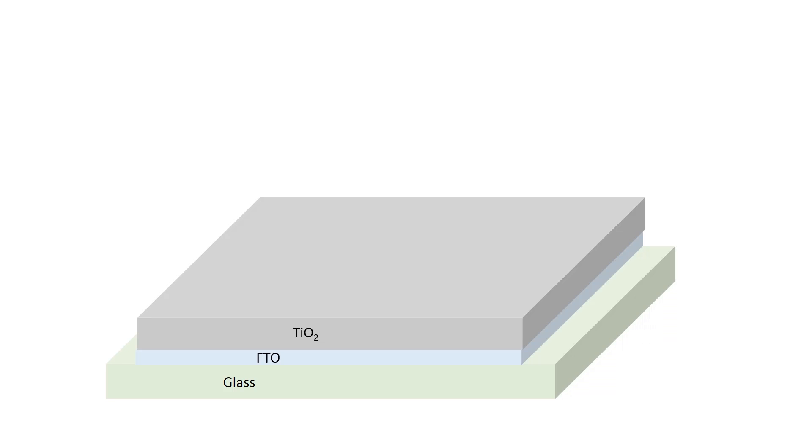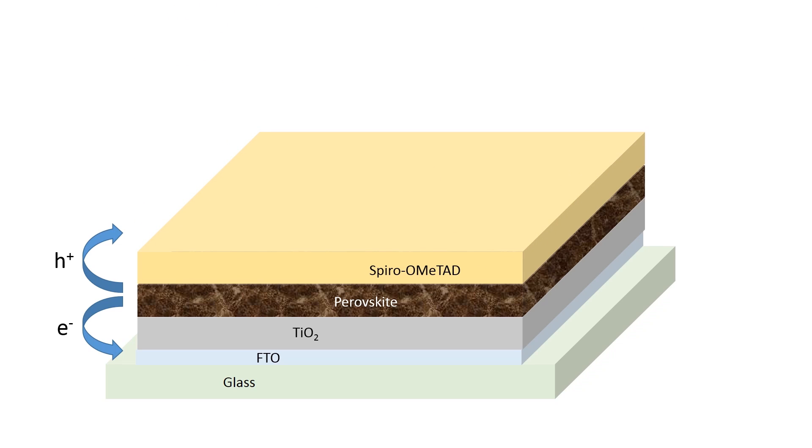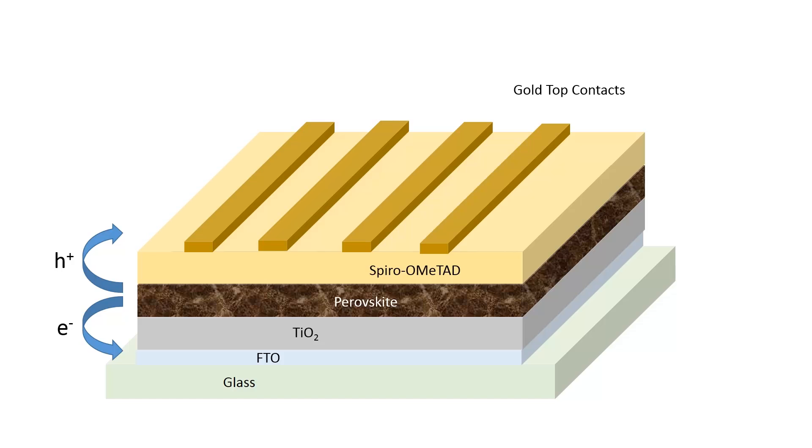On top of that, we deposit a methyl ammonium lead triiodide perovskite. The perovskite is the semiconducting crystal that absorbs sunlight to generate electrons and holes, which are then transported down to the anode for electrons and up to a cathode for holes. On top of the perovskite layer, we deposit a layer of the small molecule spiro-OMeTAD, which is a p-type layer used to conduct holes. On top of that, we evaporate a contact made of gold. The spiro-OMeTAD and gold layer make up the cathode in the solar cell.